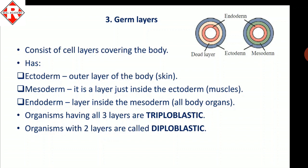Ectoderm forms the skin, mesoderm forms the muscles, and endoderm is involved in the formation of body organs. Organisms having all three layers are called triploblastic, and organisms having two layers are called diploblastic.